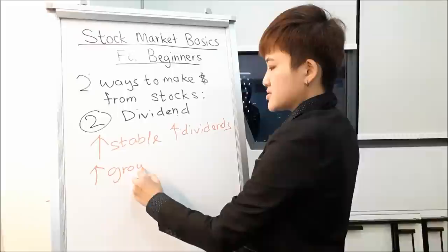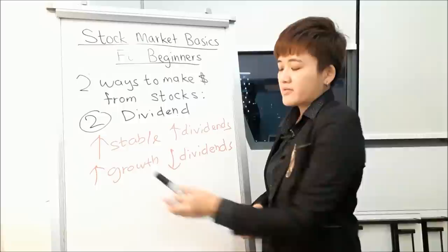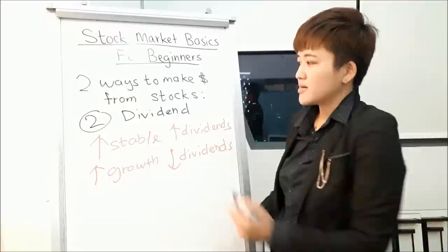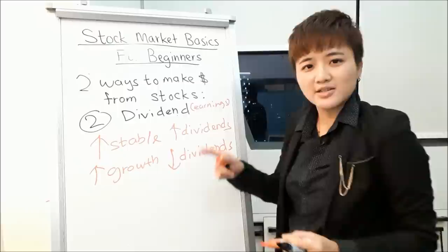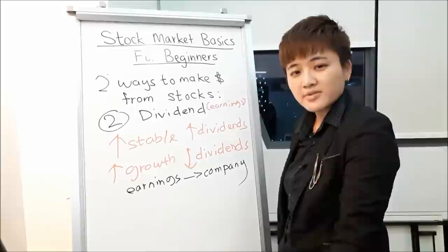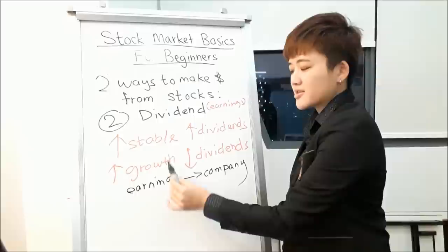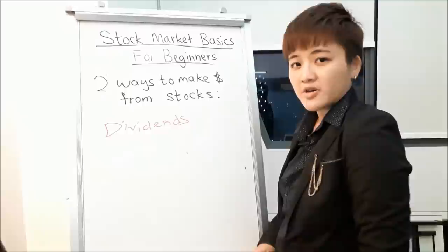Dividend payments depend on a few things. The more stable a company is, the more dividends it typically pays. High-growth companies generally pay less dividends because in order to grow, they need to reinvest capital back into the business. When a company pays out dividends, it's paying a portion of earnings to shareholders instead of reinvesting. So companies that reinvest earnings tend to experience higher growth, but they can't afford to pay you large dividends.